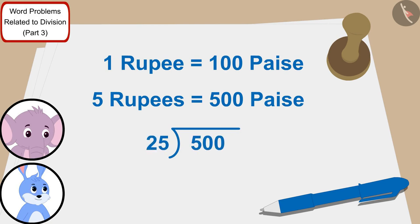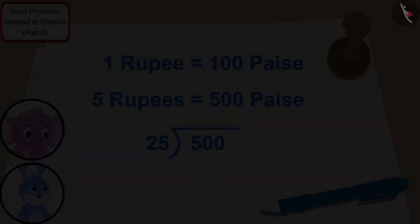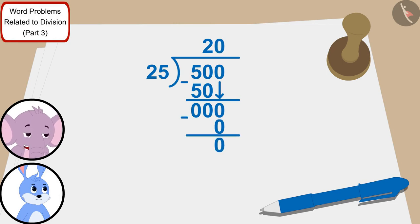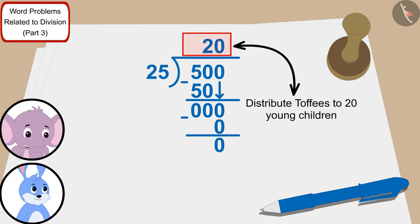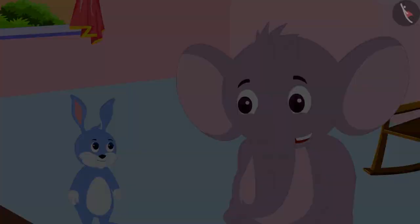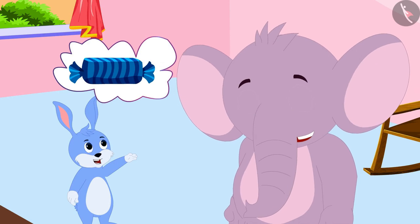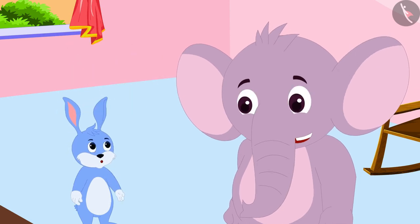So Appu quickly divided 500 by 25. Bunny, we will be able to distribute toffees to 20 young children, Appu told Bunny.